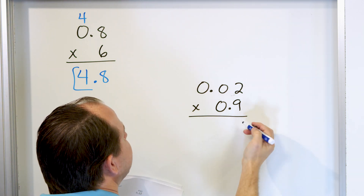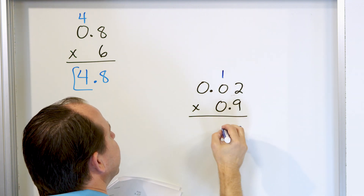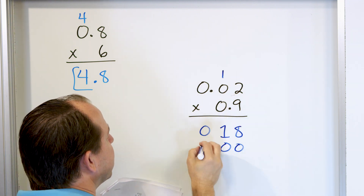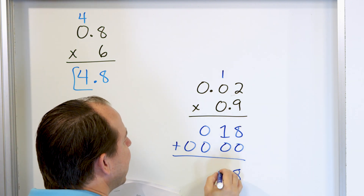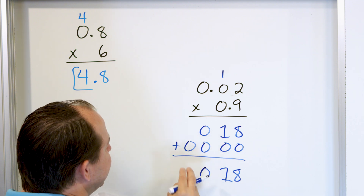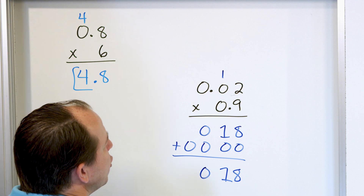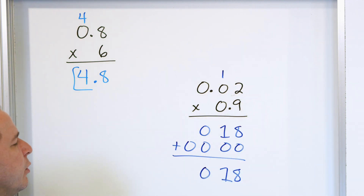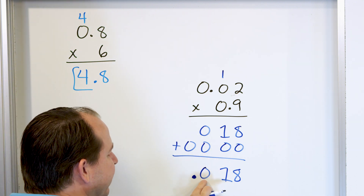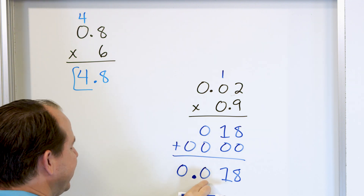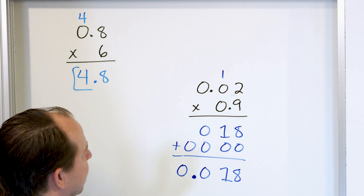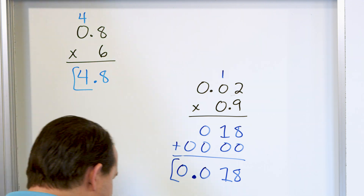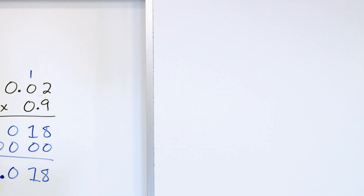Starting on the right: 9 times 2 is 18, carry the 1. 9 times 0 is 0, plus 1 more is 1. Then 9 times 0 is 0. Now we're multiplying by 0, so we drop a 0, and then 0 times everything gives us zeros. Adding the rows: we have an 8 and a 1 — you can add those leading zeros if you want. When we find where to put the decimal, there are 2 digits after the decimal in 0.002 and 1 digit after in 0.9 — a total of three digits after the decimal. So I must have three digits after the decimal in my answer: 0.018.